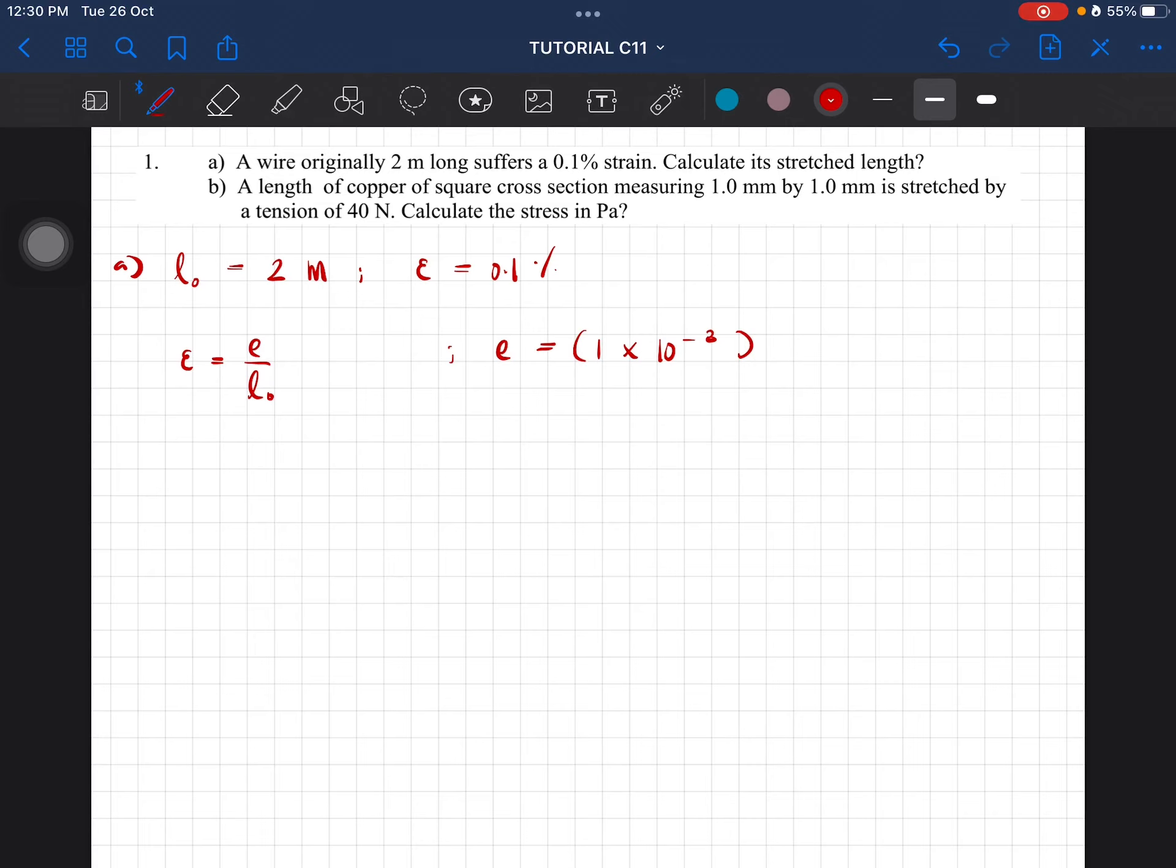The strain is 0.1% = 1×10⁻³, and the original length is 2 meters. The extension equals (1×10⁻³)(2) = 2×10⁻³ meters. Extension equals final length minus original length, so we are looking for the final length, which is the stretched length.